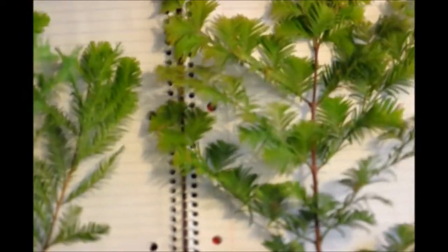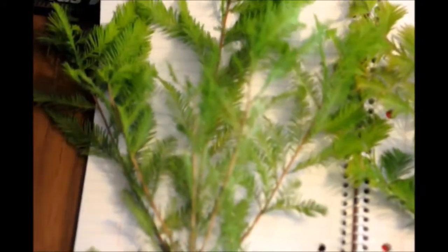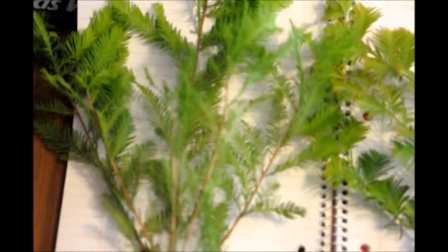So dawn redwood is an opposite-leafed branched plant. The bald cypress is an alternate-leafed plant.